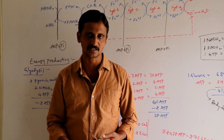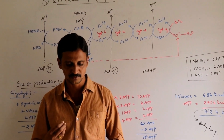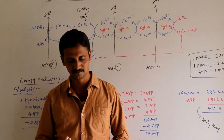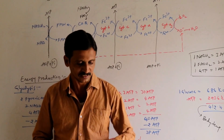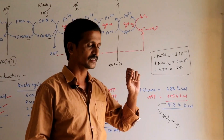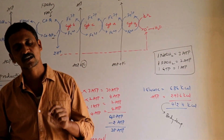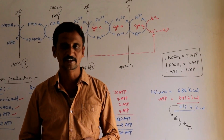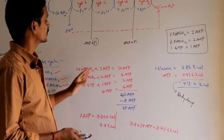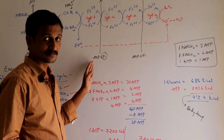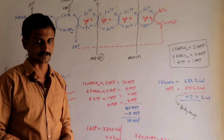Whenever glucose is oxidized, it should produce sufficient heat so that body temperature is maintained. This is done whenever each glucose molecule is oxidized. This is the end of the mechanism involved in aerobic respiration.